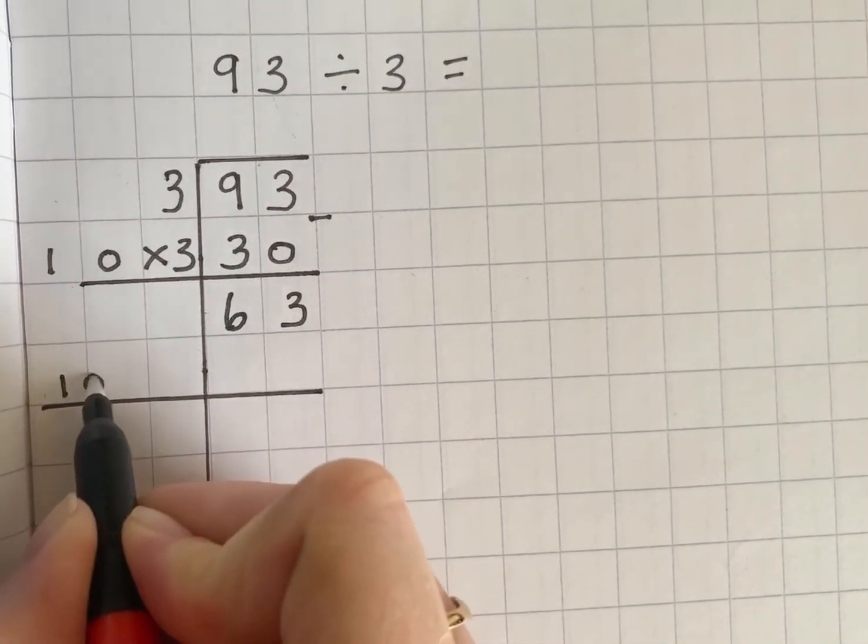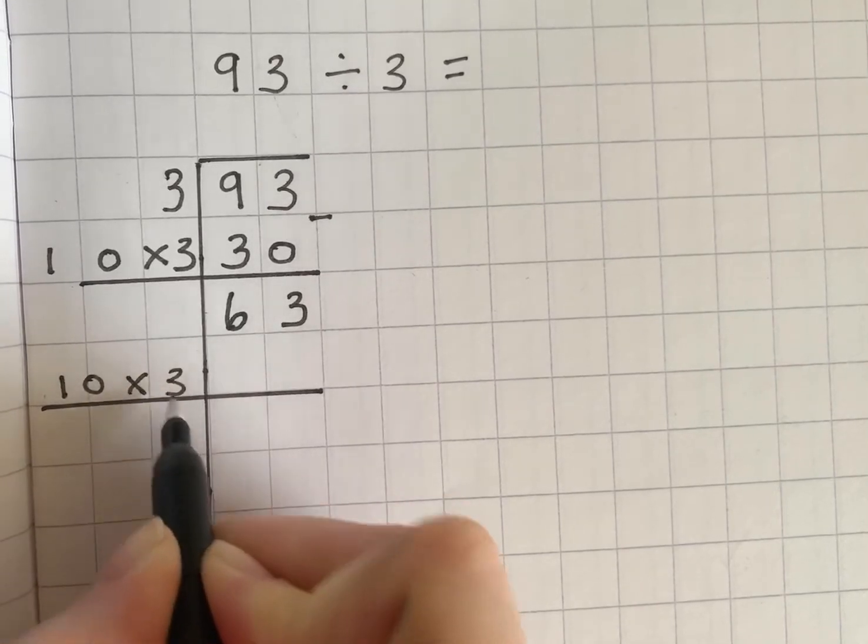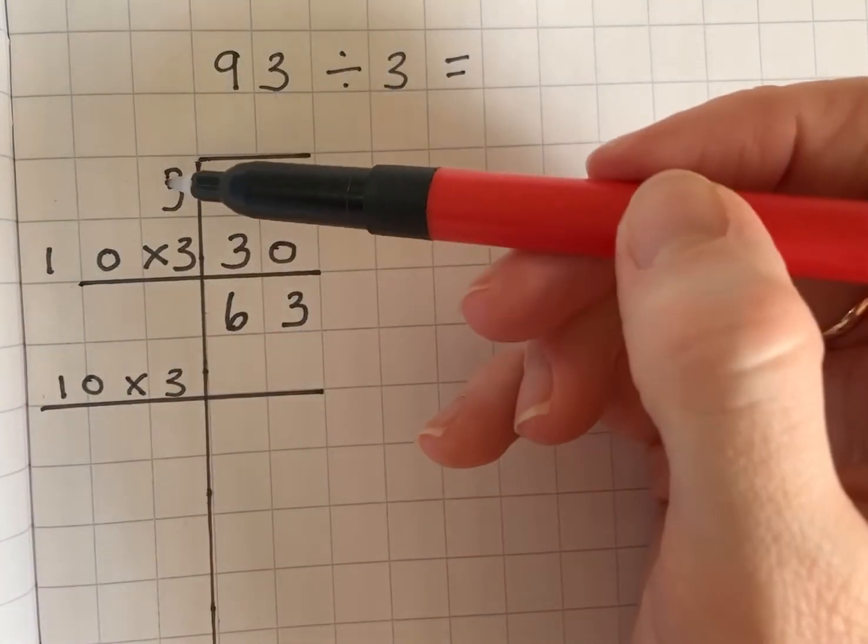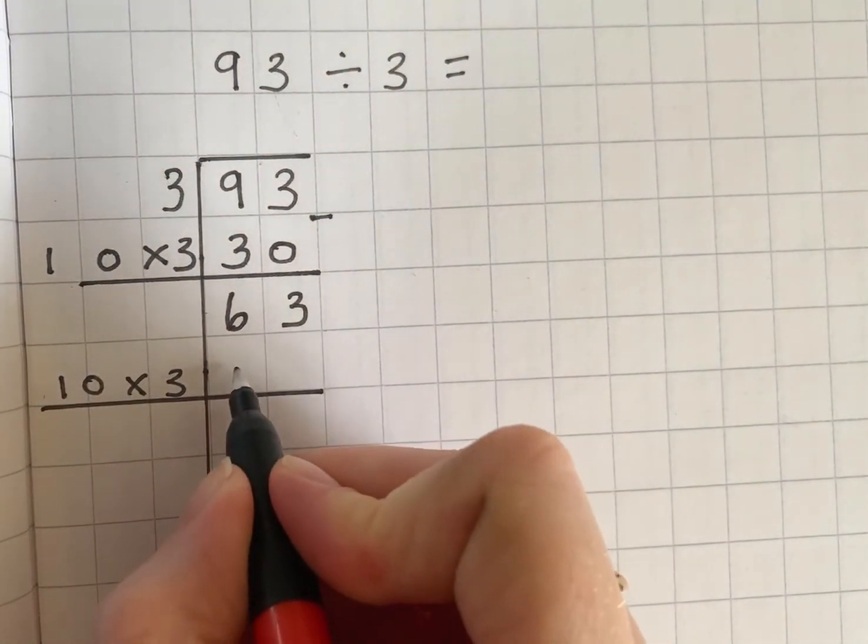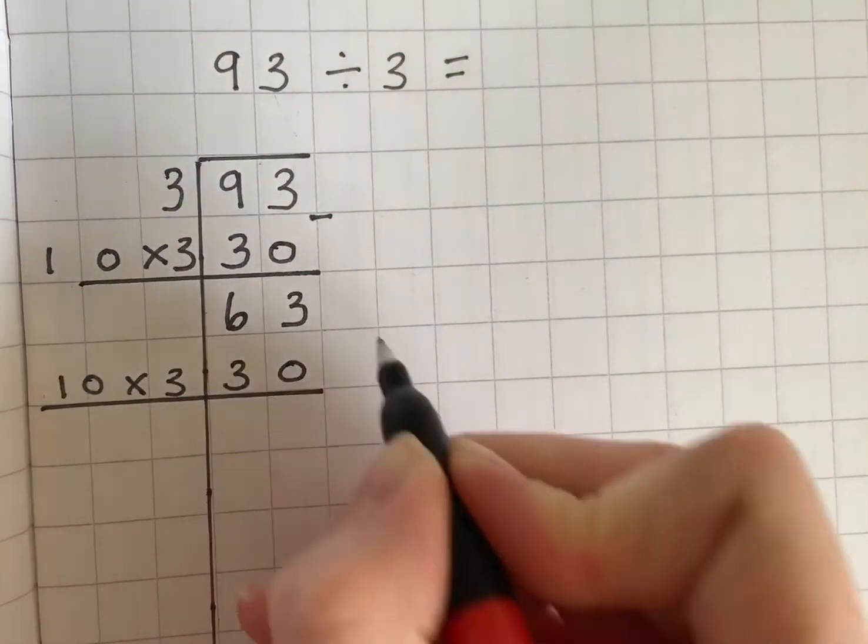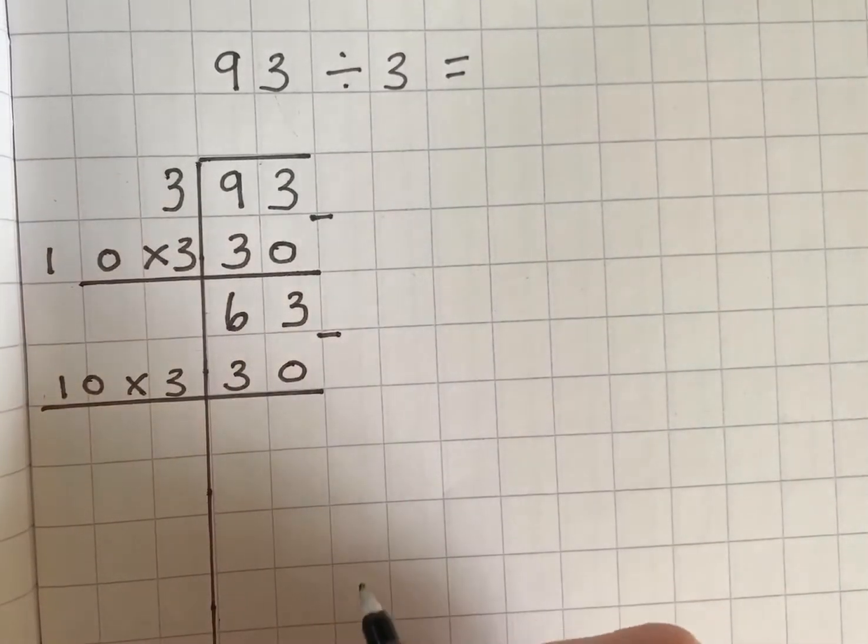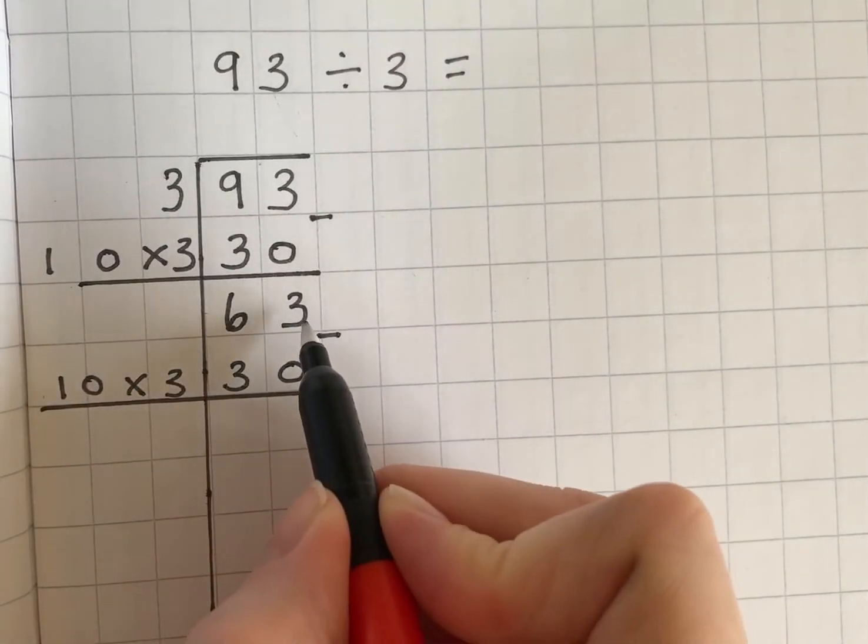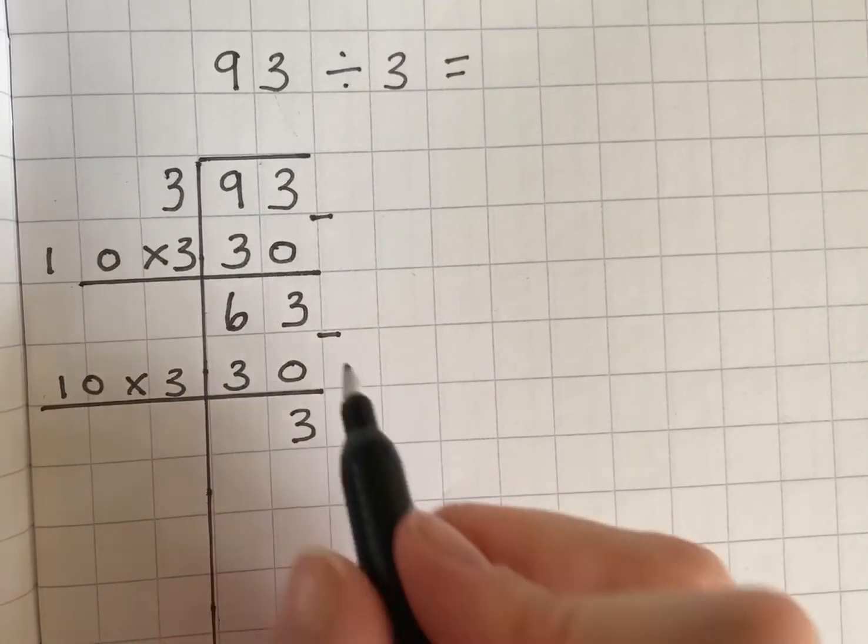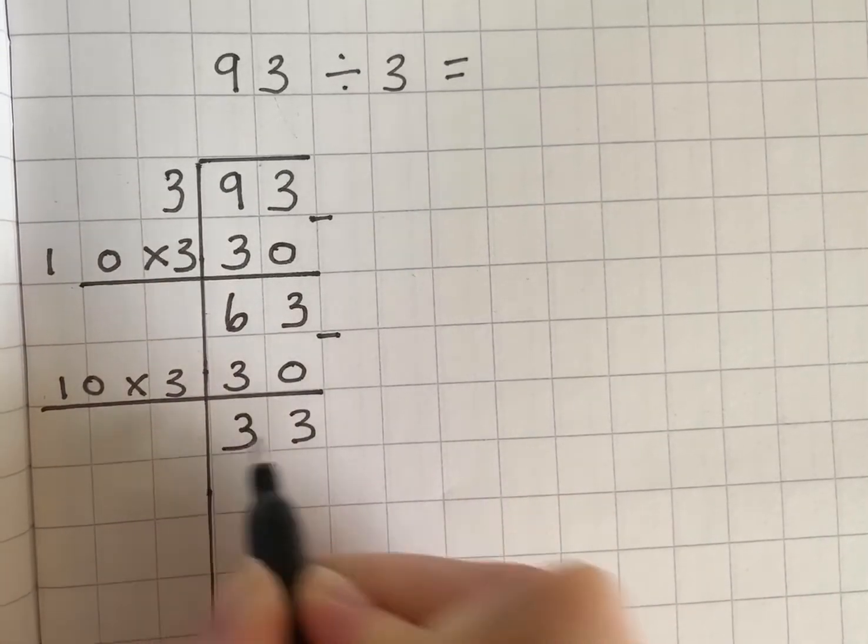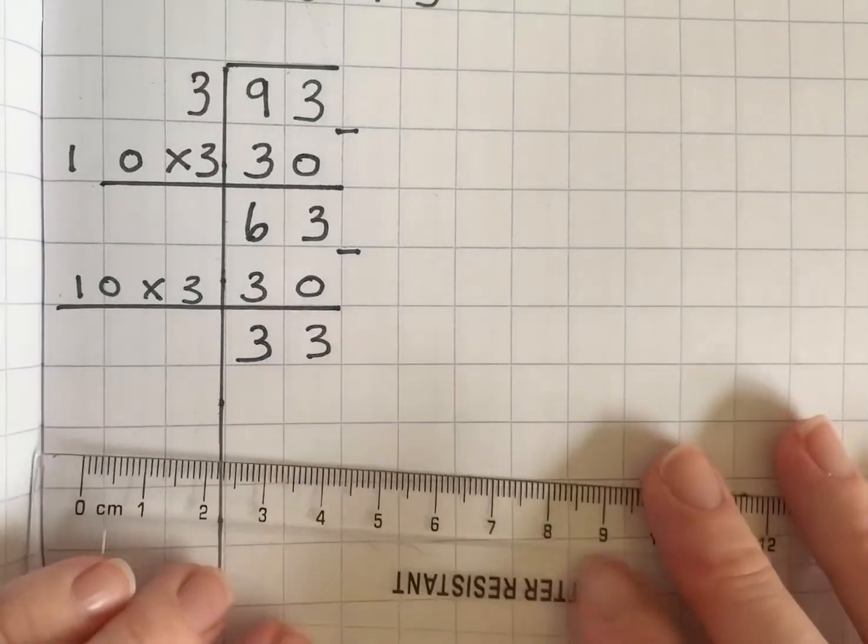Just be careful to write 10 times 3 not 3 times 10. You want all of your 3s in a line here. So 10 times 3 is 30 and again make sure you do your subtraction sign. 3 ones take away 0 is 3 and 6 tens take away 3 tens is 3 and I'm left with the number 33.